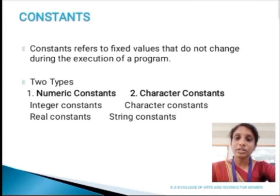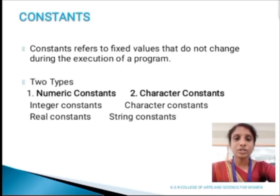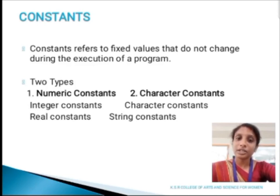Next, we are going to discuss about constants. A constant refers to a fixed value that doesn't change during the execution of the program. Constants are divided into two types: one is numeric constant and the second one is character constant. A numeric constant is further classified into two types: integer constant and real constant. A character constant is further divided into two types: character constant and string constants.